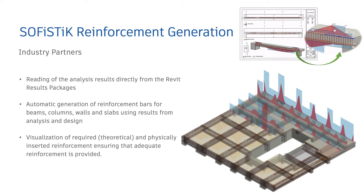Once the reinforcement is generated, it can be manually edited. This solution offers real-time checking of the reinforcement directly in Revit 3D views — this is really cool and productive. Using the check command, required and existing reinforcement in a framing element can be compared. If the reinforcement is adjusted, the diagrams react instantly, giving precise feedback to the engineer about how to optimize the reinforcement patterns.